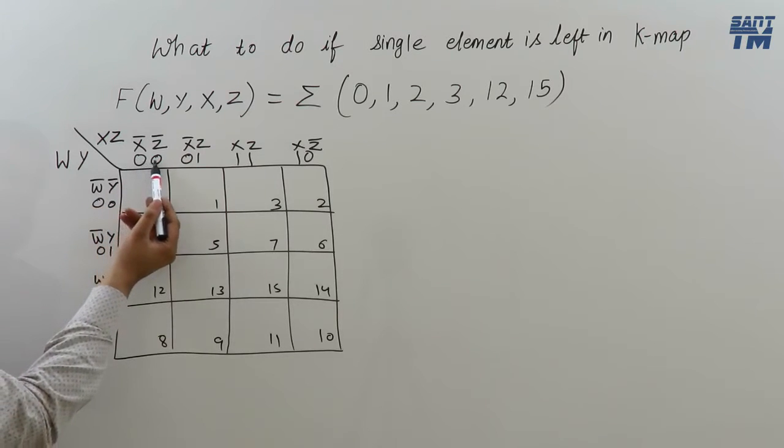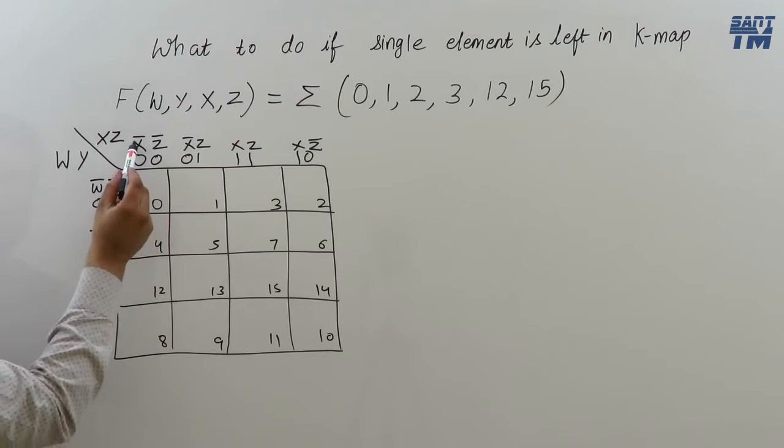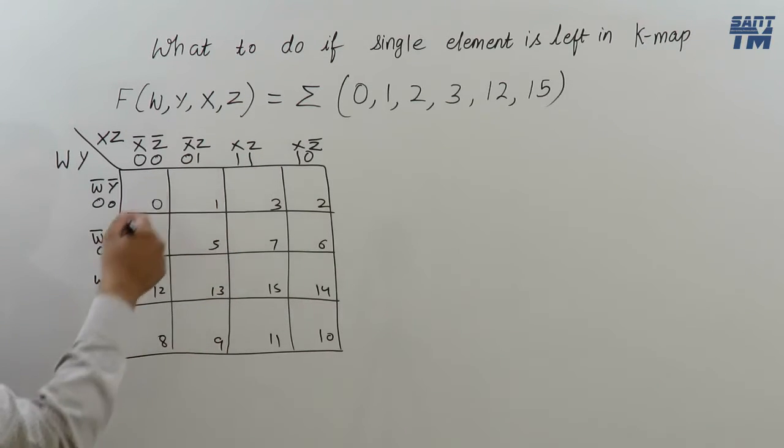As it is of SOP kind, the terms are multiplied. X bar, Z bar. Bar will come on 0 element. In case of POS, bar will come on 1 element. But in case of SOP, bar comes on 0 element. So this is the mapping that we have done already. Now we have to place the 1s.